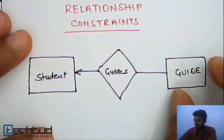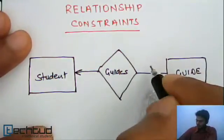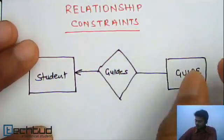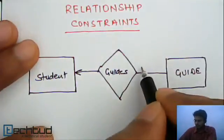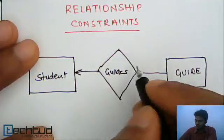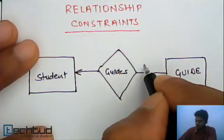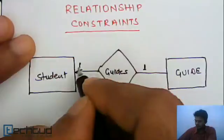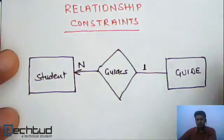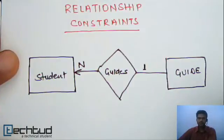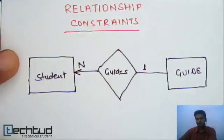So the relationship will be here like one guide guides multiple students - one is to N. So this is the kind of limitation or restriction we impose over a relationship depending upon the scenario or given requirement. This is called relationship constraint.